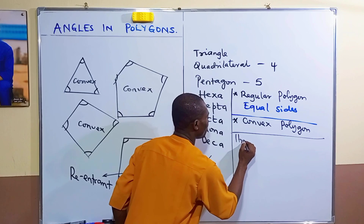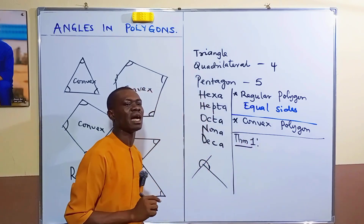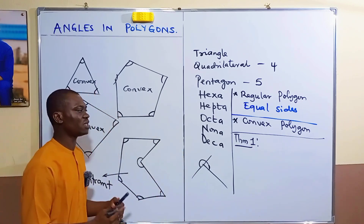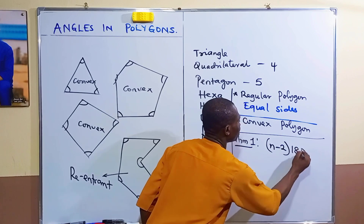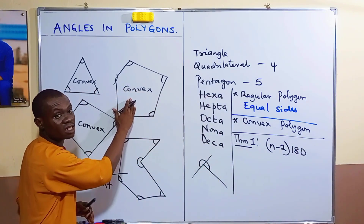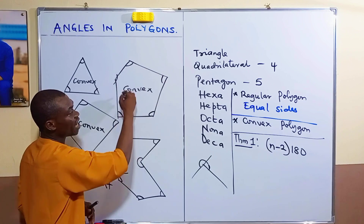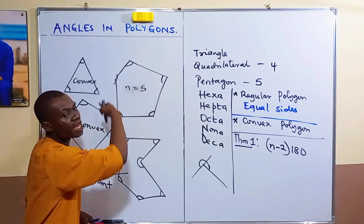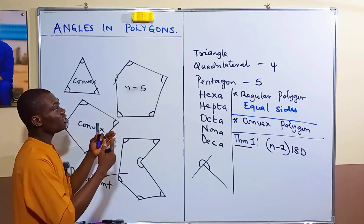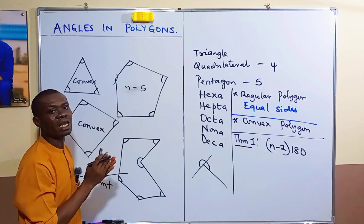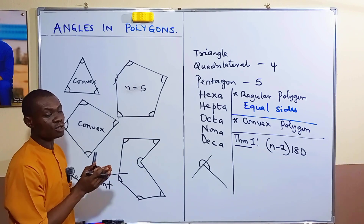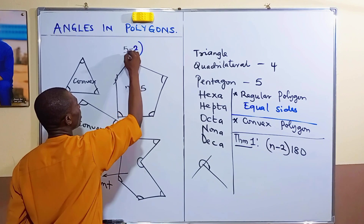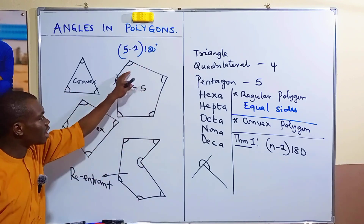Theorem one states that the sum of the interior angles of an n-sided convex polygon is always equal to (n − 2) × 180. So for a pentagon, n equals 5; subtract 2 to get 3, then multiply by 180 to get 540 degrees. That gives you the total sum of interior angles without having to add them individually.